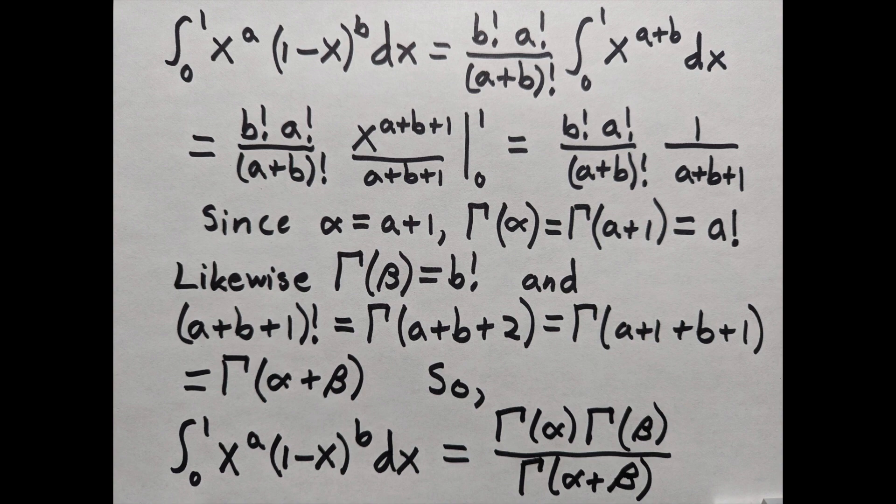Since alpha is a plus 1, gamma of alpha is gamma of a plus 1, which means it's a factorial. Likewise, gamma of beta is b factorial, and a plus b plus 1 factorial rearranges into gamma of alpha plus beta. Putting that together, the proof is complete.